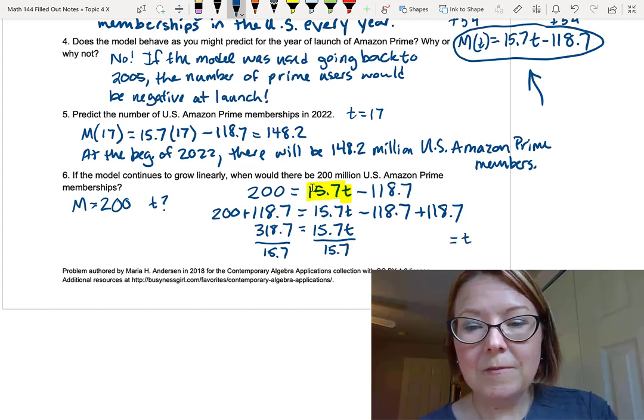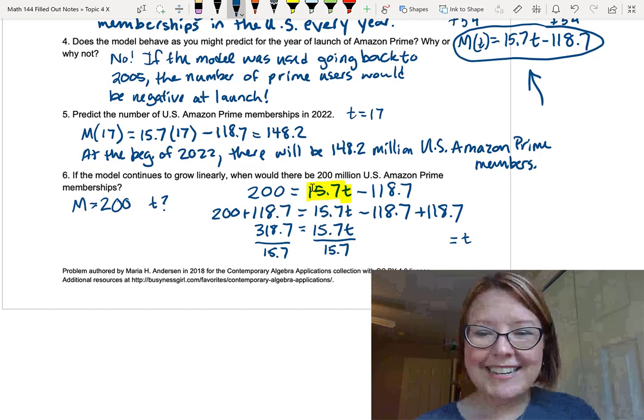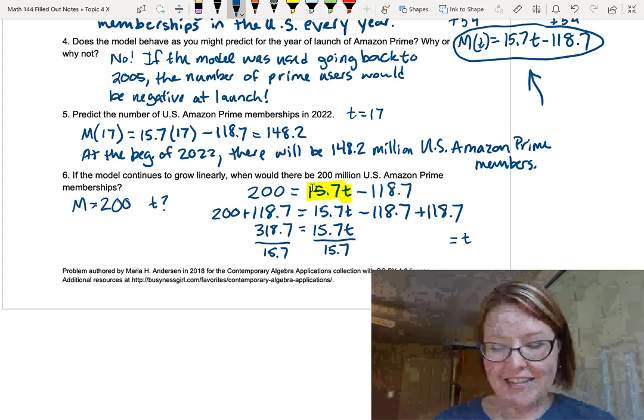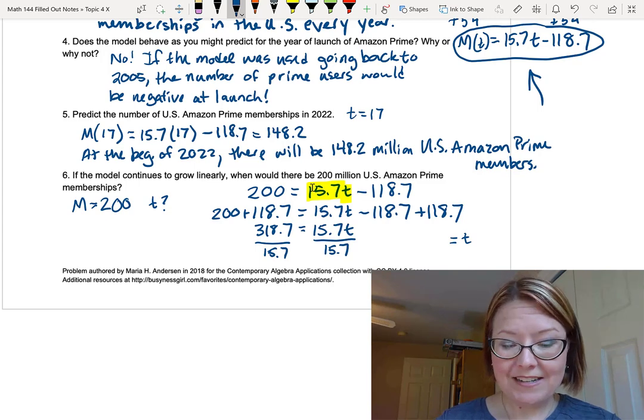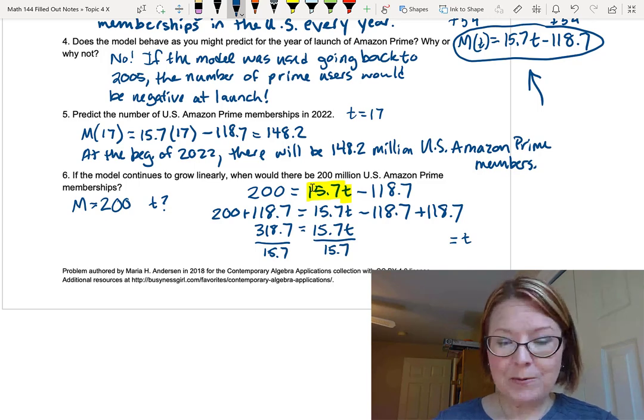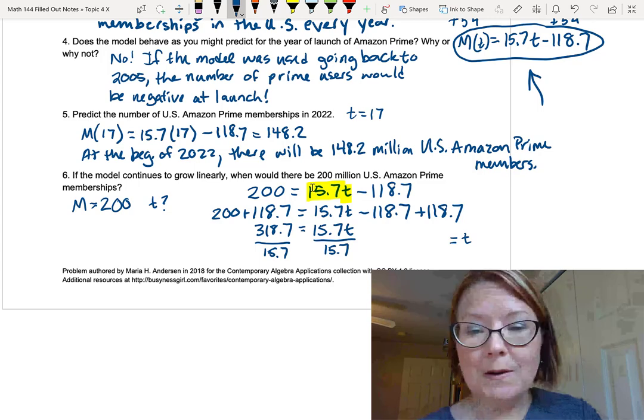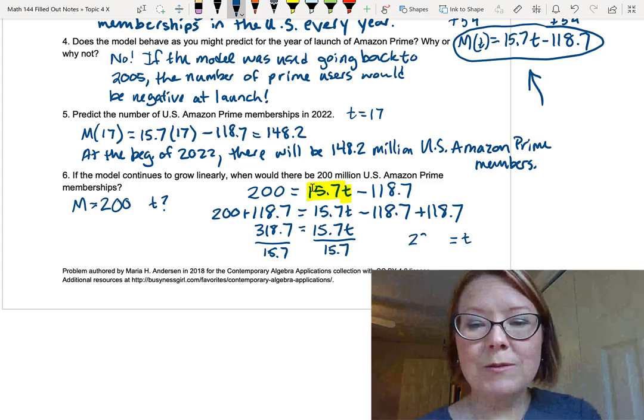That gives us 318.7 over 15.7 equals t over 15.7. We need to do a little bit of math there. On the right-hand side, it simplifies to be t. On the left-hand side, we need to do that division. 318.7 divided by 15.7. That gives us 20.3 when we round to one decimal place.